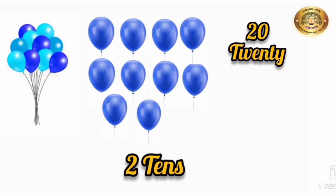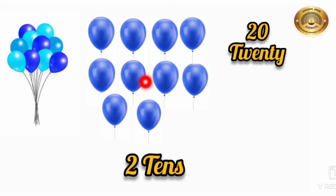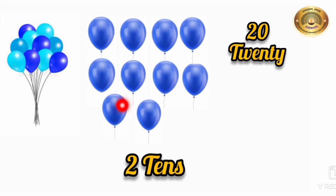The next number which comes after 19 is 20. Children, see here — here are 10 balloons. Now let's count these balloons: 1, 2, 3, 4, 5, 6, 7, 8, 9, 10. Here we can see 10 balloons, and here also we can see 10 balloons. So 1 ten and 1 ten make 2 tens. So our next number is 20. The spelling of 20 is T-W-E-N-T-Y. 20.